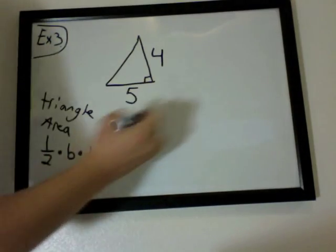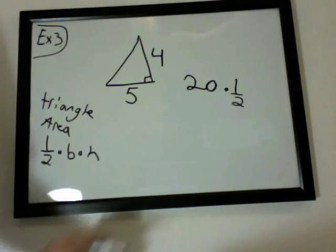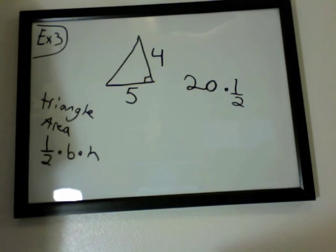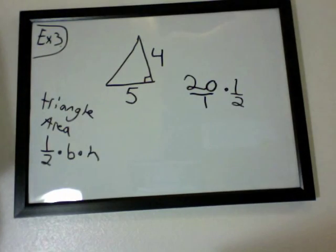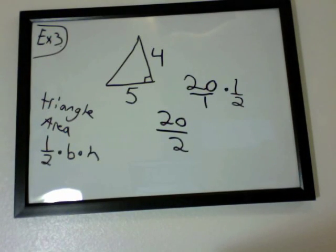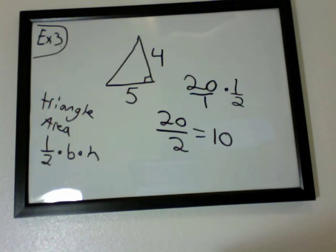So you multiply those together, you get 20. Now you times it by 1/2. So when you're doing fractions, remember, you just multiply the tops together and the bottoms together. That's 20 over 1 times 1/2. So it looks like 20 divided by 2, which should give you 10. So the area of this triangle would be 10.